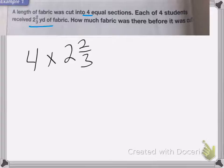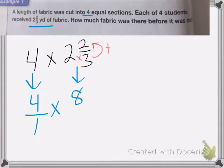Now I cannot multiply by a mixed number. So I first need to change my whole number into a fraction, so four over one, and then I change my mixed number into an improper fraction. To do that, we multiply two times three to get six, and then I add the numerator. Six plus two is eight. So I end up with eight-thirds.